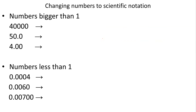Let's look at some numbers bigger than one. So 40,000 — where's my decimal point? Well, it's all the way at the end. I move it one, two, three, four times. What do I get? Four times 10 to the fourth. Zeros are placeholders, you don't write them. If you put 4.0, you're wrong, because that implies there are two significant numbers. How many do you see before you played with this? One.